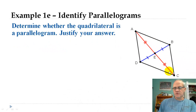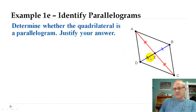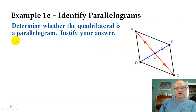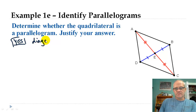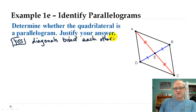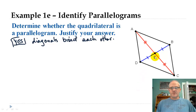What about this one? We don't know anything about the sides or the angles, but we've got a diagonal here and these two parts are congruent and these two parts are congruent. So in other words, the two diagonals bisect each other — they split each other into equal parts. That's one of our tests, so yes, the diagonals bisect each other, meaning this is a parallelogram.